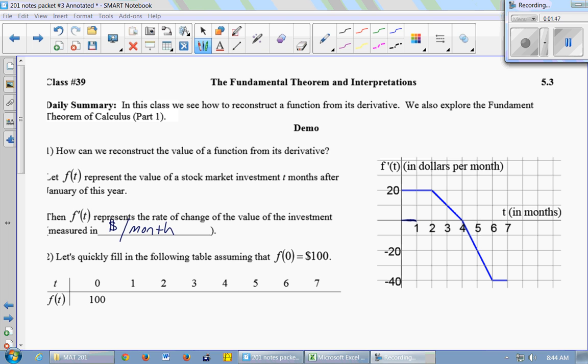If we think about the area of this rectangle right here, the width here is one month. The height is $20 per month. So the area of that thing, $20 per month times one month, gives a value of $20. The months cancel. You get $20.